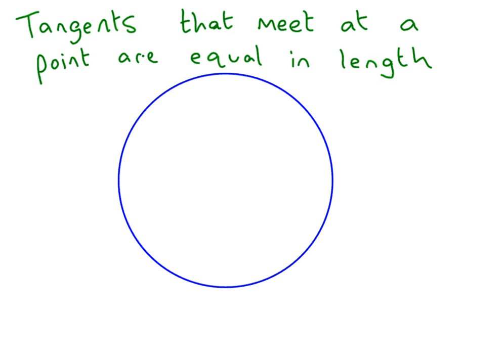Tangents that meet at a point are equal in length. Now this one's easier to see on a diagram. That means we take any point from around the circle, not inside the circle, outside the circle. We'll just pick this random point. From it, we draw lines that touch a circle once. OK? So that's one tangent. That's another tangent. Almost. I think I quite managed to touch it. But there you go. Let's cheat a bit.